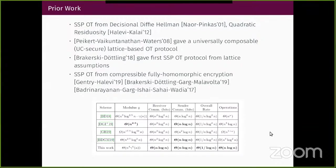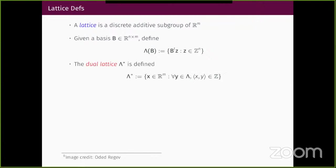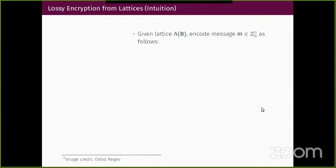In terms of lattice-based oblivious transfer, we have work to do to bring these protocols into the realm of practicality. In this work, we make progress by reducing the total communication required by both parties by a factor of about N log N, while also reducing total computation. Before the construction, I'll breeze through some lattice definitions. We're interested in the geometric relationship between a lattice and its dual: a primal lattice that is dense in one dimension is sparse in another, and the dual has reciprocal geometry.